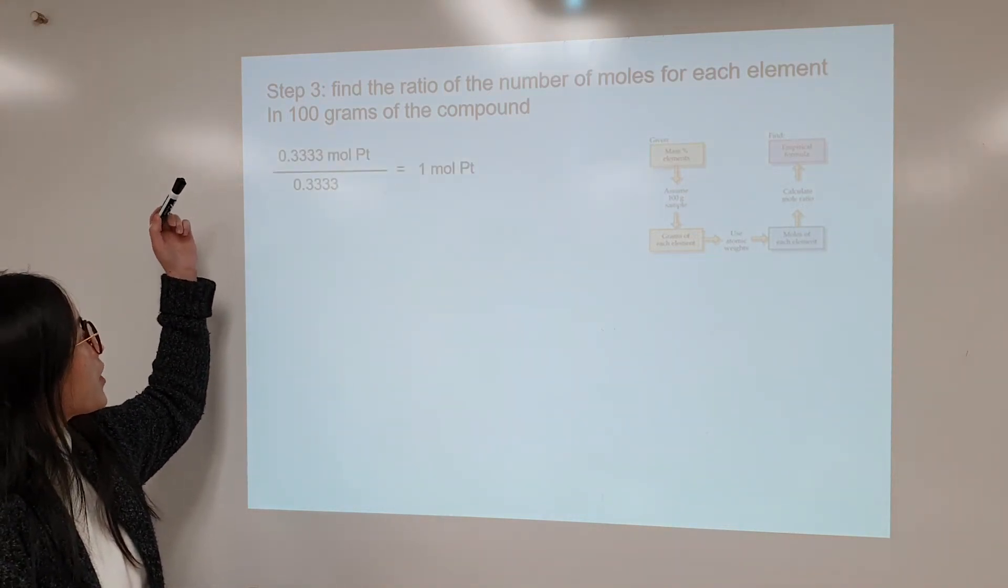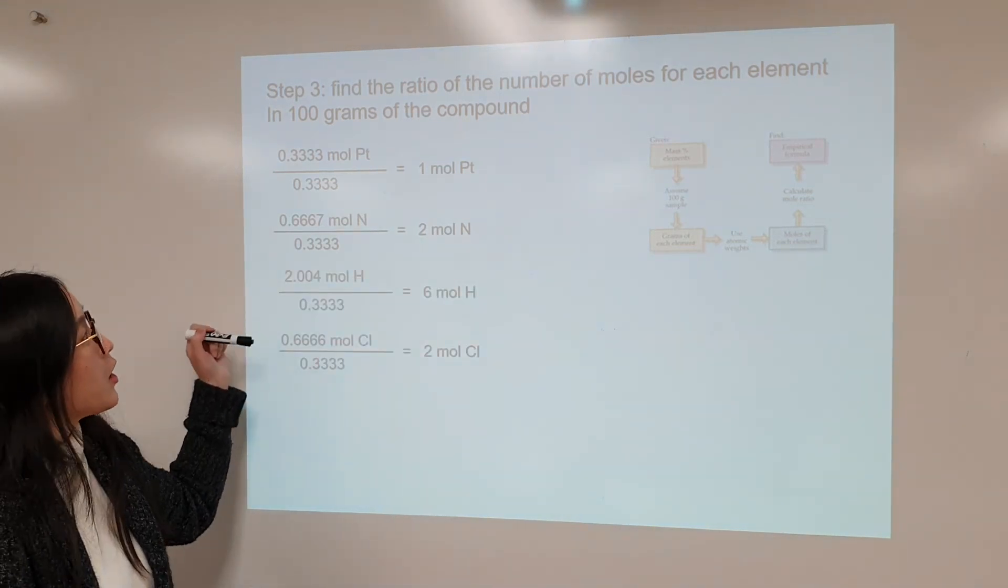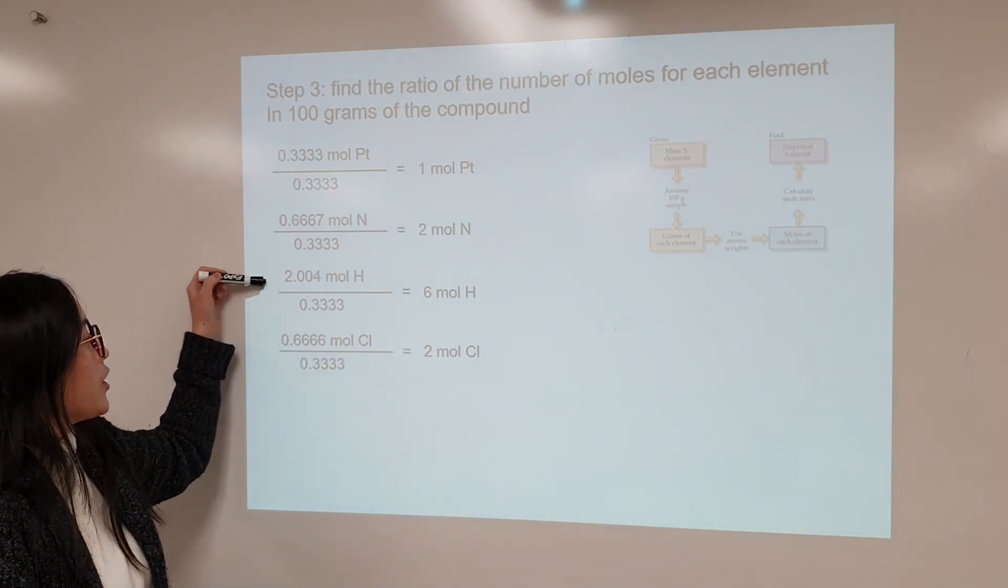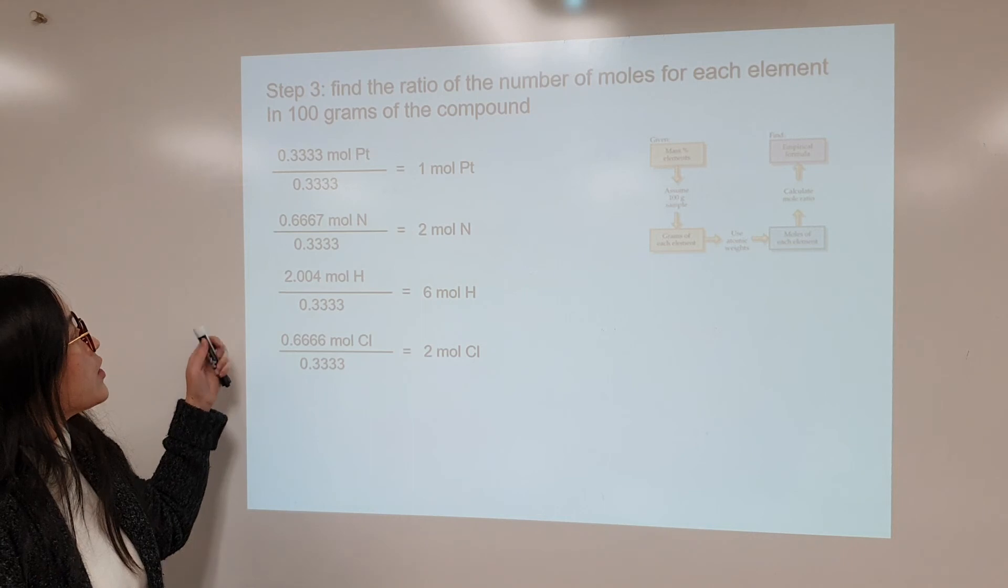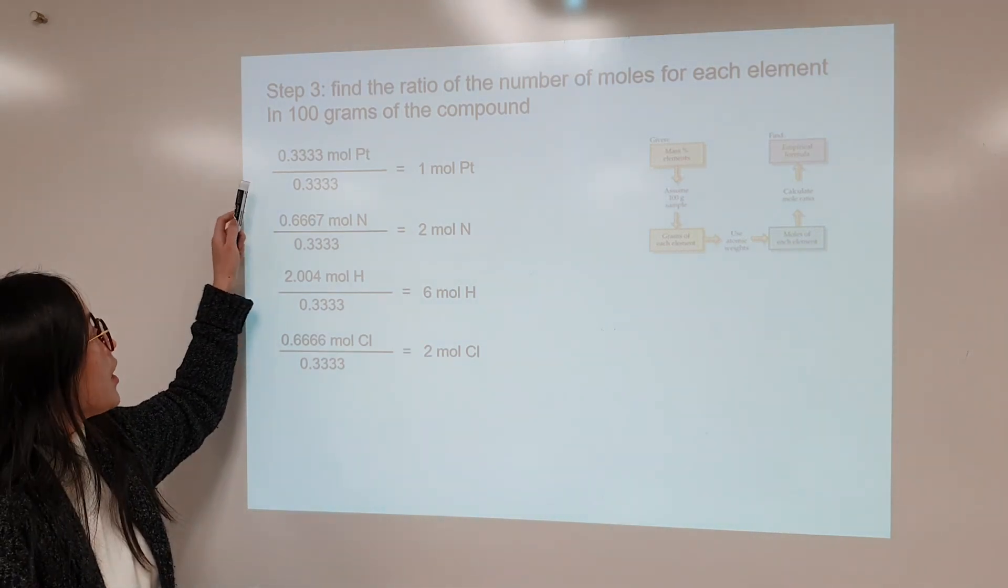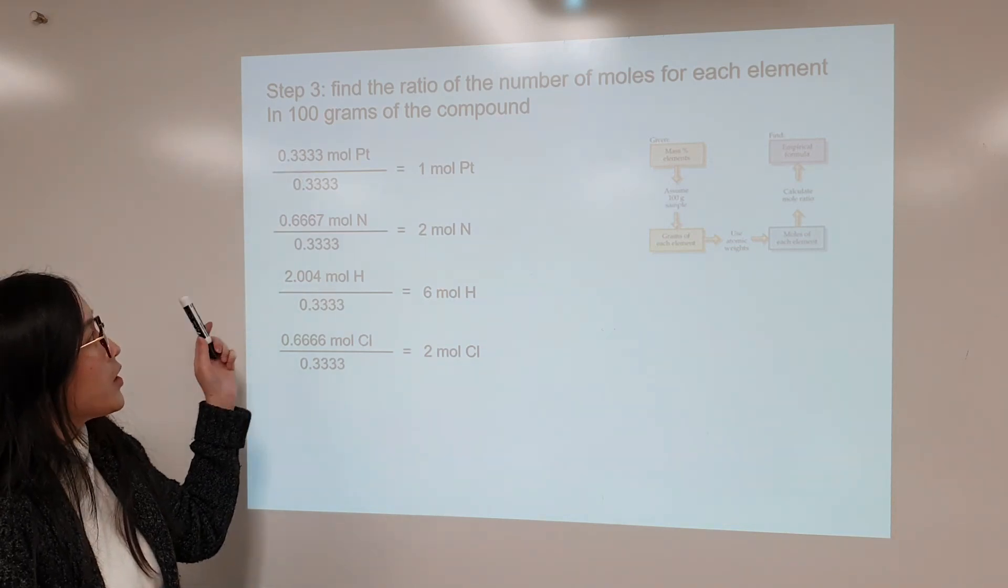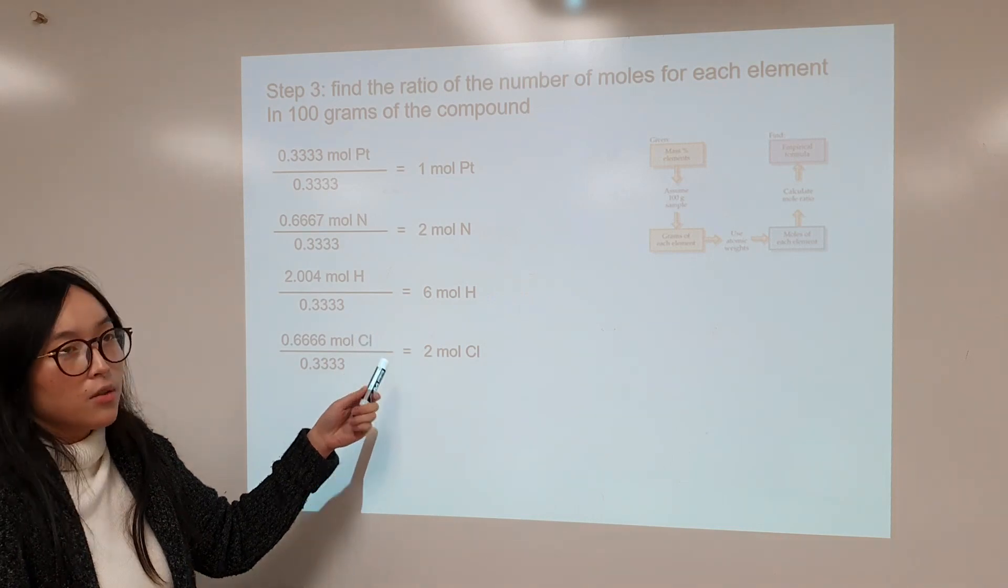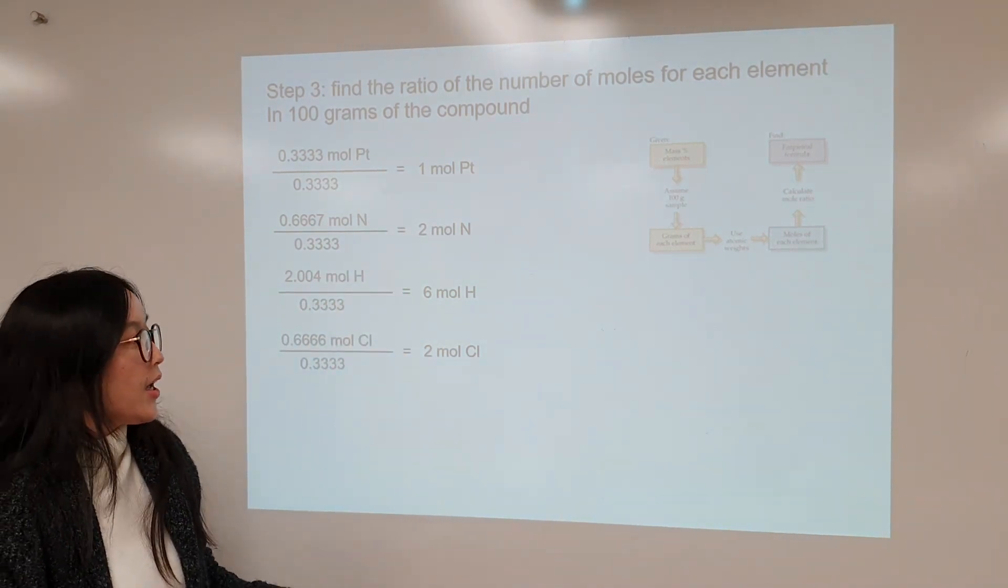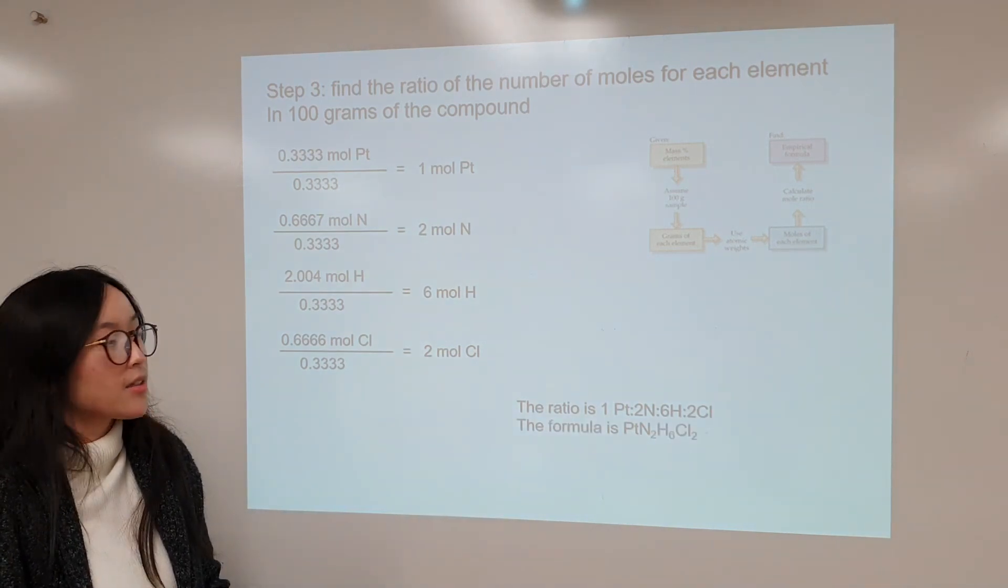So this is the work we would have for getting the ratio of our empirical formula, we would take each element, platinum, nitrogen, hydrogen, and chloride, and divide by the smallest mole from the compound. And that's, in this case, platinum. So we're dividing by 0.3333. And then we'll get our ratio, which is luckily in whole numbers. So you don't have to do anything extra. And then you'll get the ratio as this. And our empirical formula is this form, that compound.